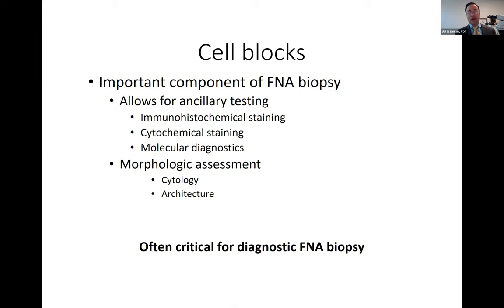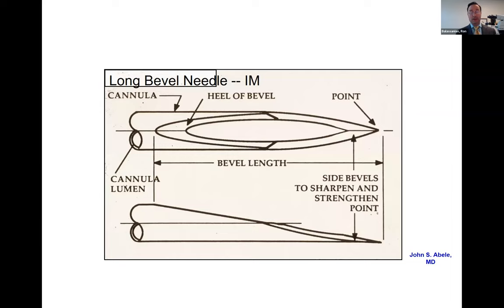The reason it works better on an FNA cell block is that the FNA needle selectively extracts the epithelial component for an epithelial tumor and amplifies the discohesive cells in the lesion, so you get more epithelial cells and less stromal component that might interfere with your sample. Even without expensive ancillary testing, having a cell block gives you a morphologic assessment that lets you evaluate the cytology differently and look at architecture. In our practice here at UCSF, cell blocks have become the most critical component of FNA biopsy.